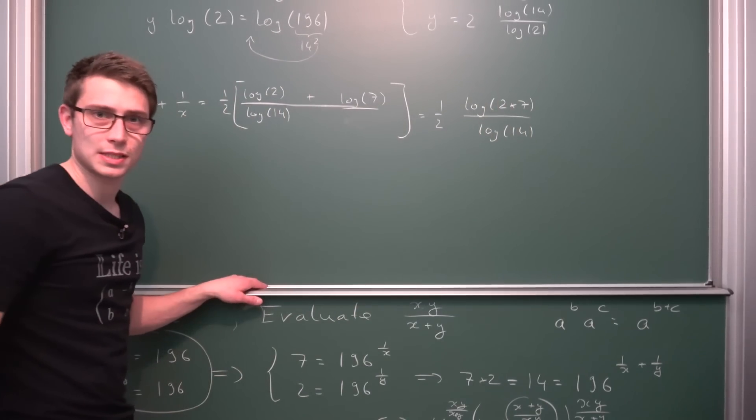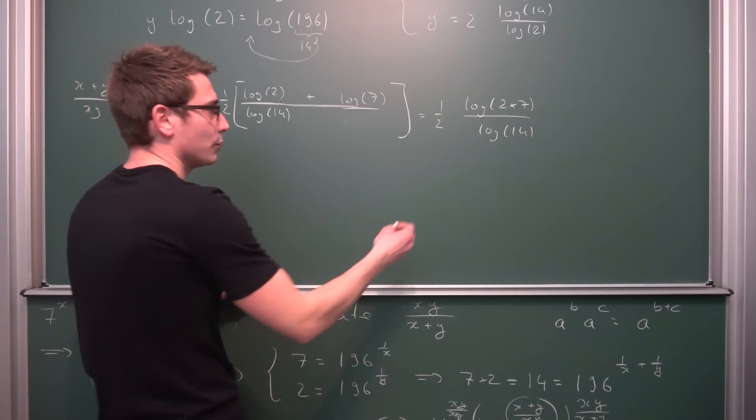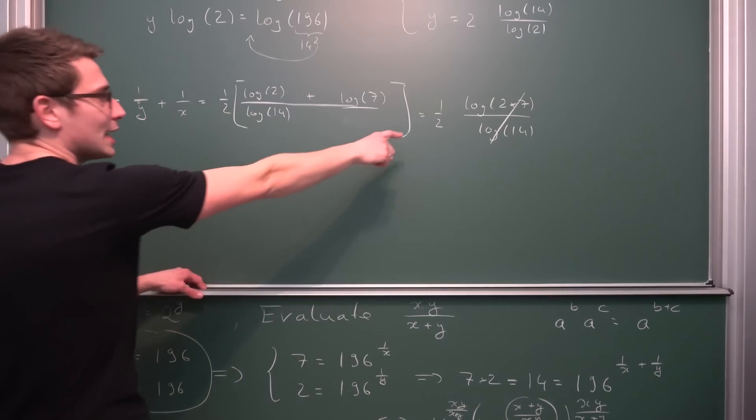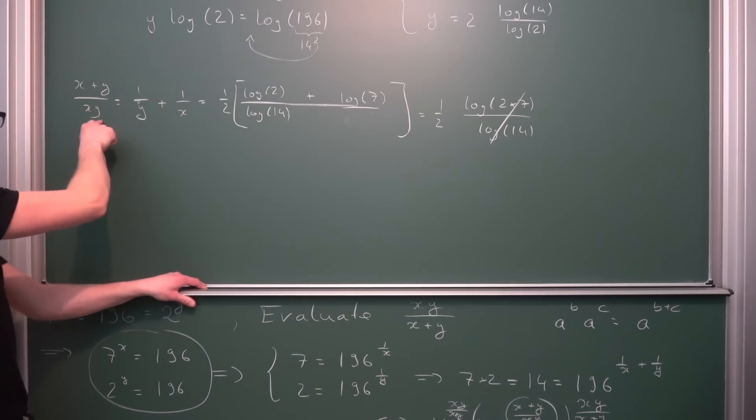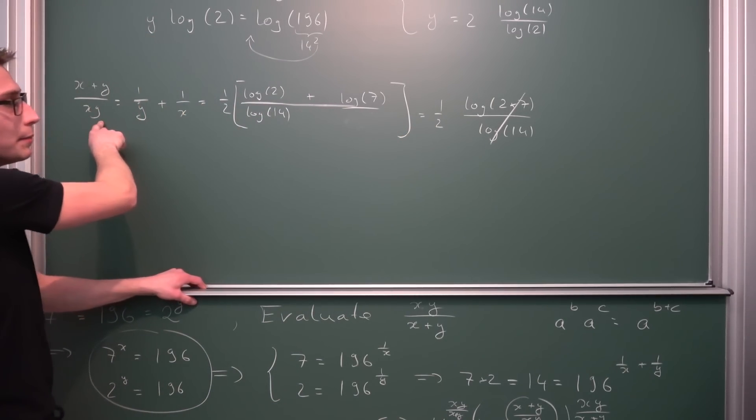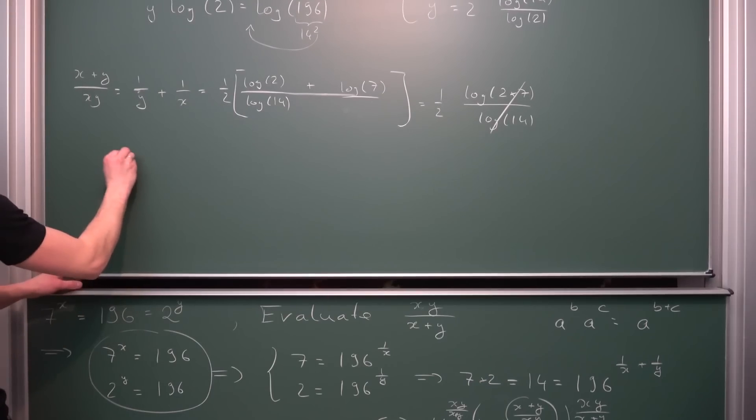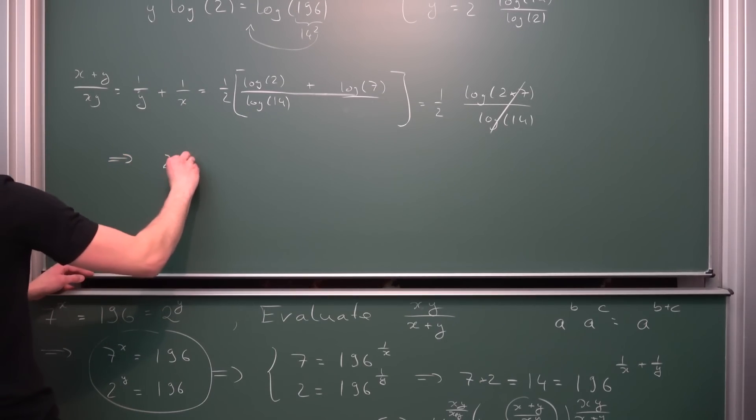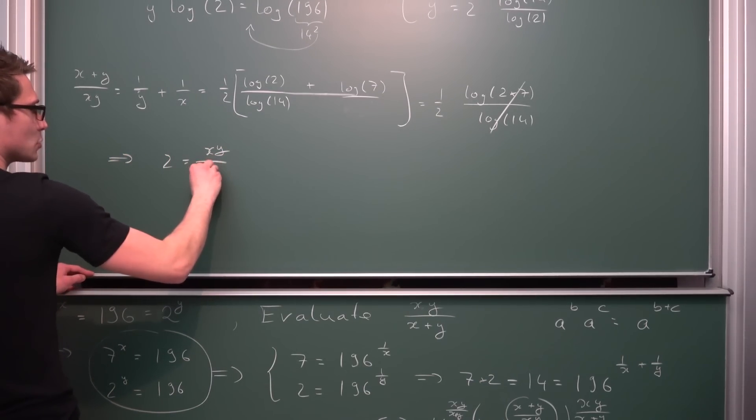And obviously log of 2 times 7 is log of 14. Log of 14 divided by log of 14 is just 1, giving us 1 half for the reciprocal of what we started with. Meaning if we were to take the reciprocal we are going to get once again 2 is equal to xy divided by x plus y.